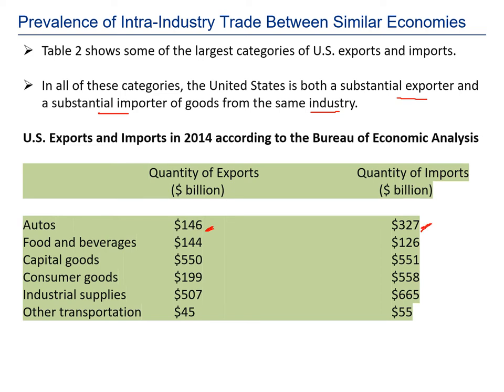There is a substantial amount of both exports and imports. For example, in capital goods the exports are 550 and the imports are 551 — extremely close. In such a situation the Grubel-Lloyd Index would come closer to 1, and similarly for all the other industries shown.